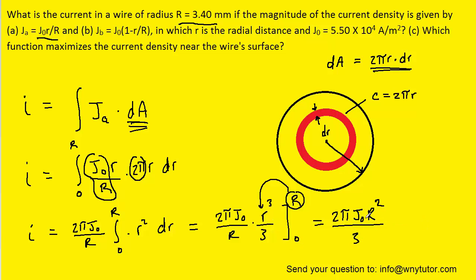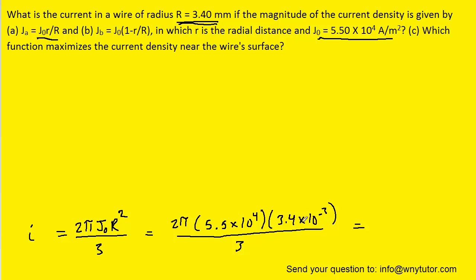And now we're ready to plug in the known values for J0 as well as capital R. Recall that J0 was given to us in the question as was capital R. Notice that we converted capital R into the standard unit of meters by multiplying the millimeters by 10 to the minus 3. And this result turns out to be approximately 1.33 amps. So that would be the correct answer to part A.